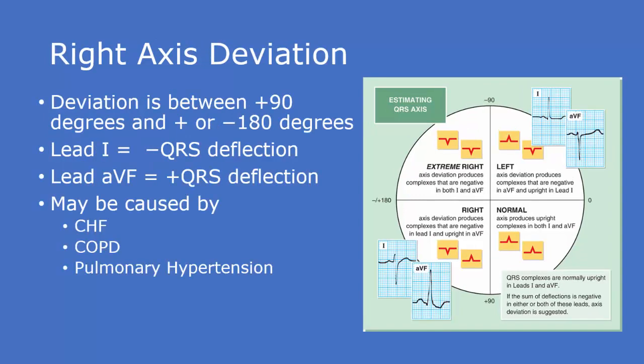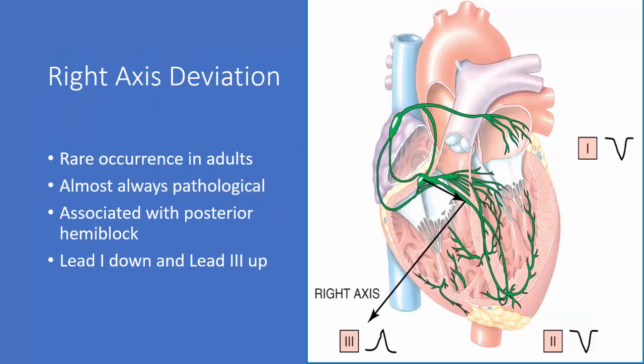With right axis deviation, you're going to have lead one with a negative QRS and AVF positive. This could be caused by CHF, COPD, pulmonary hypertension, maybe even right ventricular hypertrophy. Essentially what's happening is the right ventricle gets more muscular and requires more electricity, so it actually pulls the axis to the right. This is a rare occurrence in adults and almost always pathological.